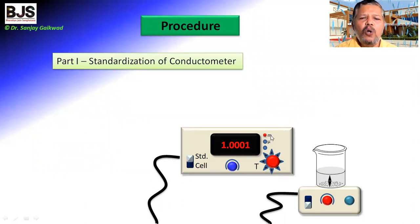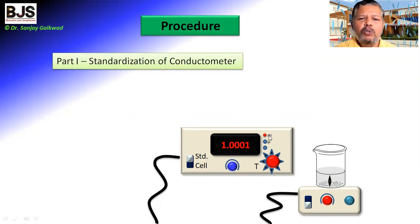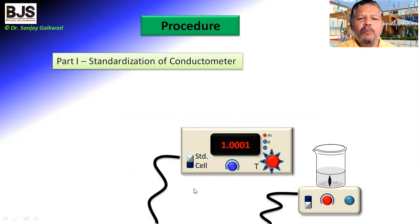When the indicator light is at 'm', that is milli, the value is × 10⁻³. If the light is at micro, the value is × 10⁻⁶. The displayed value is 1.001 × 10⁻³, meaning the conductometer is standardized. If this value is not displayed, then with the help of the adjustment knob, we can set this value, and after adjustment, once this value is displayed, the conductometer is standardized.